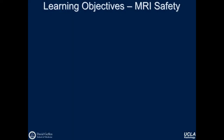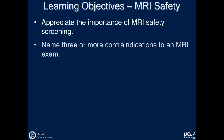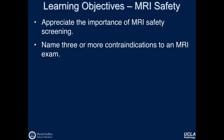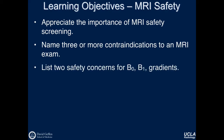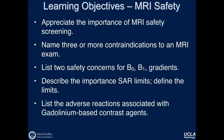At the end of this module, you should reach the following learning objectives: appreciate the importance of MRI safety screening; name three or more contraindications to an MRI exam; list two safety concerns for B0, B1, and the gradients; describe the importance of SAR limits and define the limits; and list the adverse reactions associated with gadolinium-based contrast agents.